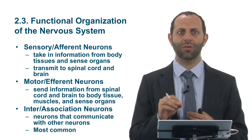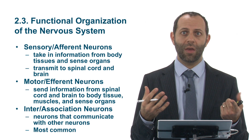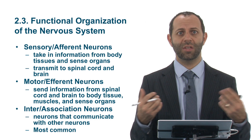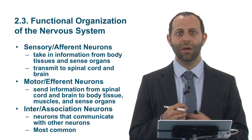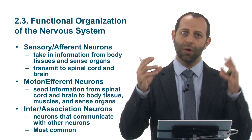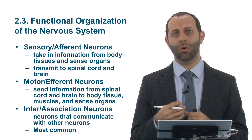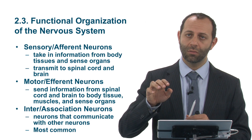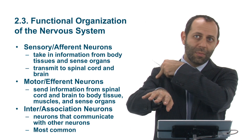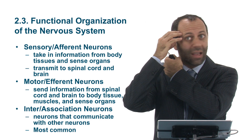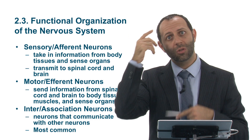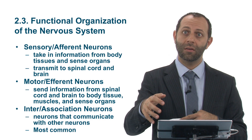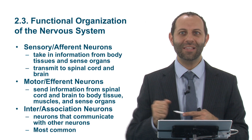The motor neurons, or efferent neurons, send information out so that we can react in a motor fashion. Information is sent from the spinal cord and brain outwards to the body tissues, muscles, and sensory organs. For example, if I touched a hot tea kettle, my sensory neurons would send that information up my arm into my spinal cord and brain, which would then send the message back through the motor neurons saying move your hand, because that is really hot.